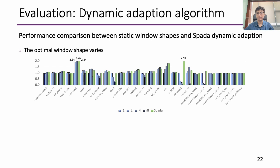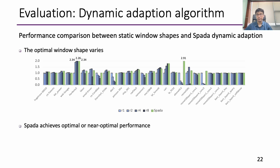We then evaluate the effectiveness of the dynamic adaptation algorithm, comparing static window shapes against SPADA's dynamic adaptation. With a fixed window size of 8 and varying heights of 1, 2, 4, and 8, the optimal static window shape varies per matrix. For example, Red Sky and Carey prefer taller windows, while CA Condiment and NX FC2 prefer wider shapes. In cases like Email Enron and ResNet FC, performance even varies non-monotonically. Our adaptive window shape achieves optimal or near-optimal performance, proving the effectiveness of our algorithm.